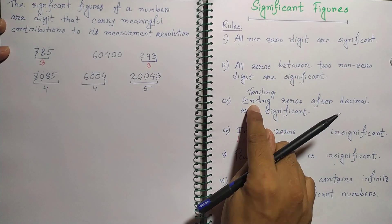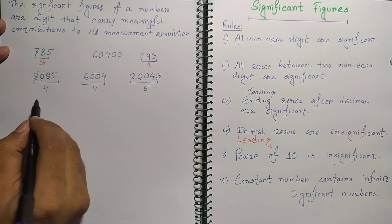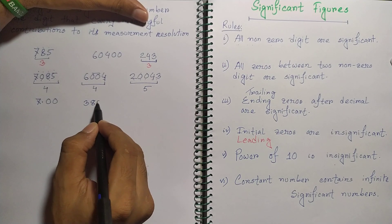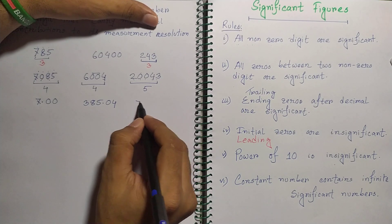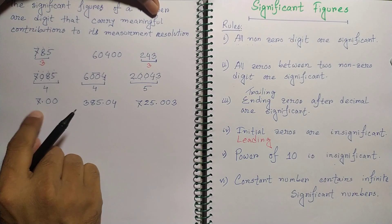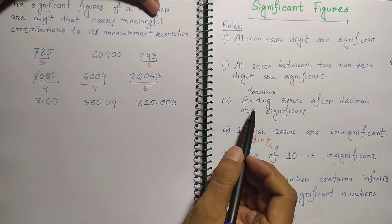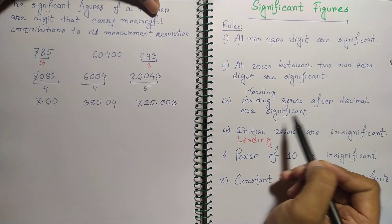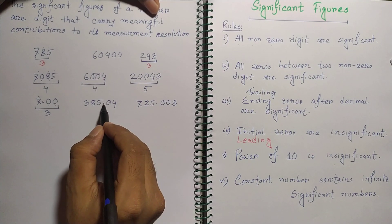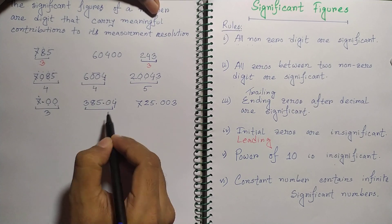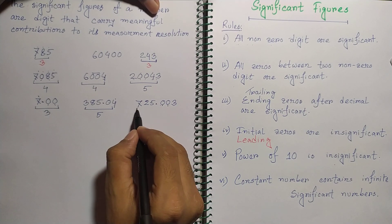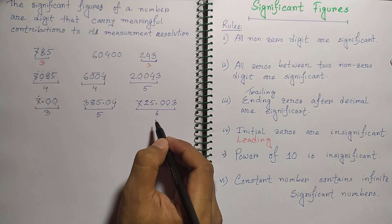Trailing zeros — the ending zeros after a decimal point — are significant. For example, 7.00 has 3 significant figures. 385.04 has 5 significant figures because the zero after the decimal is also significant. And 725.003 has 6 significant figures, counting the zeros after the decimal.